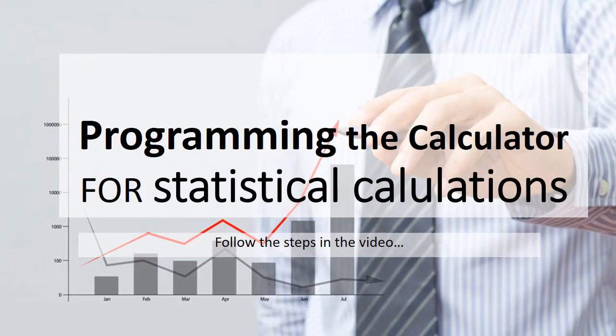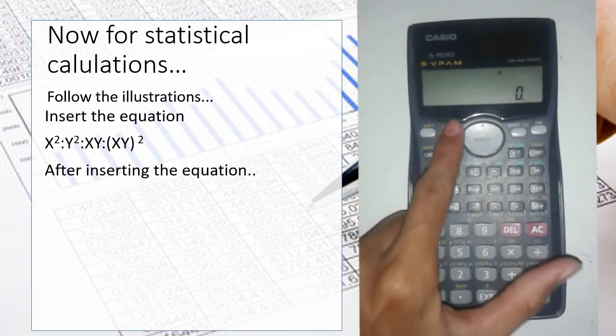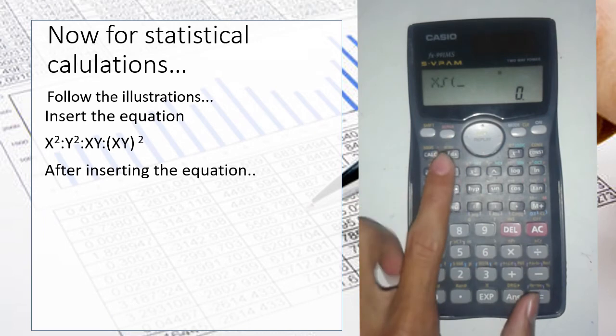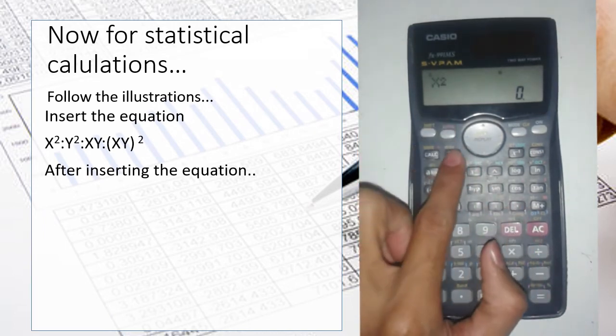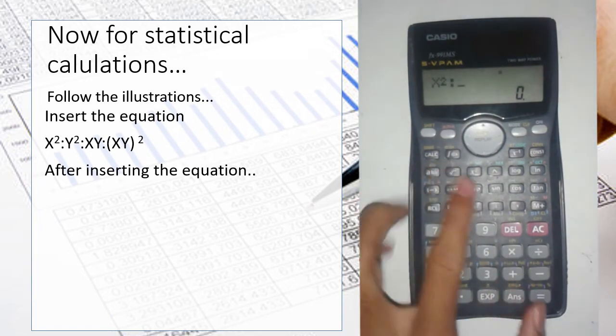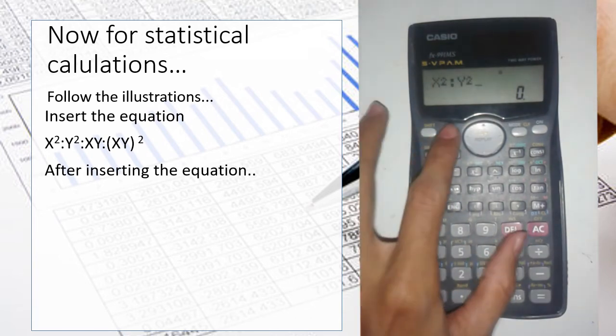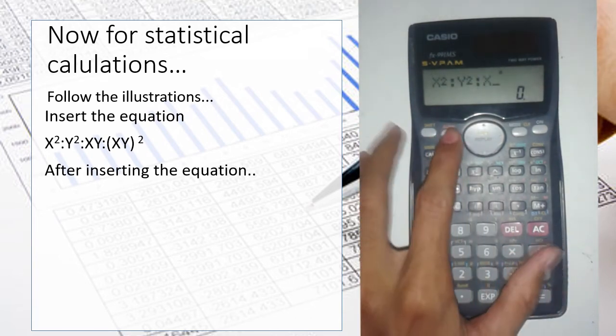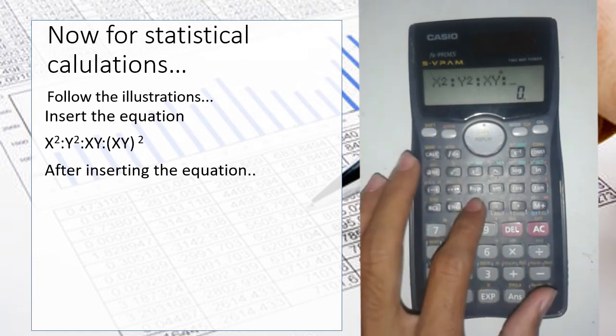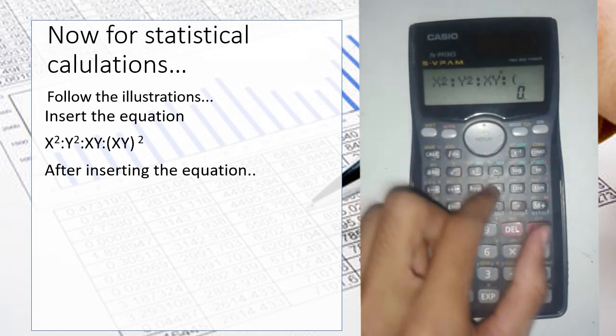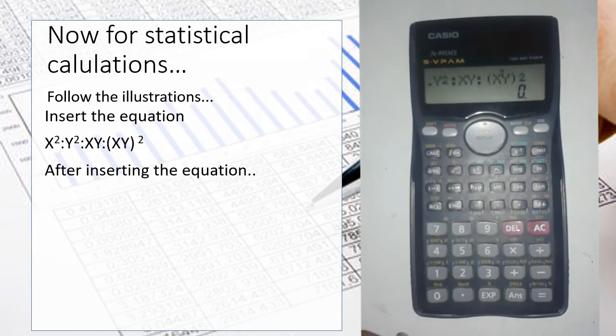Programming the calculator for statistical calculations. Follow the illustration and insert the equation as x square, then two dots that you can get by pressing alpha and the button next to the integration sign, then y square, open parenthesis xy, close parenthesis squared. Now press the calc button.